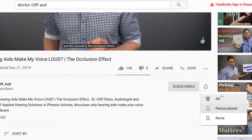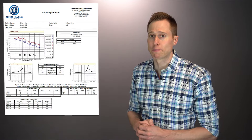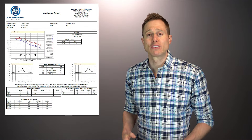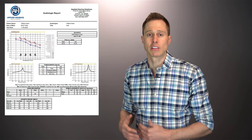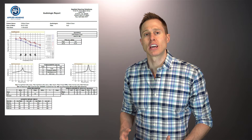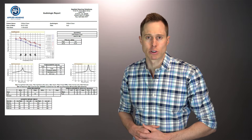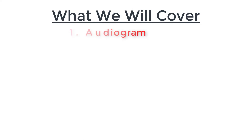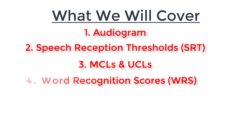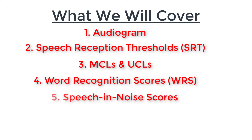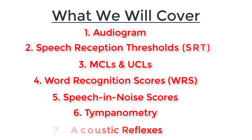When you have a hearing test, your hearing care provider will plot the results of your test on a document that looks something like this. While most information on the internet helps you understand the audiogram, otherwise known as the grid portion of this hearing test with the X's and the O's, I want to help you have a foundational understanding so you can really understand your hearing loss. The main components of a hearing evaluation that I will be covering in this video include the audiogram, speech reception thresholds, MCLs and UCLs, word recognition scores, speech and noise scores, tympanometry results, and acoustic reflexes.